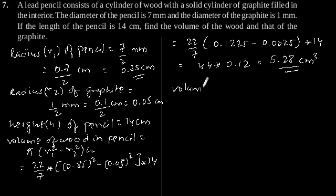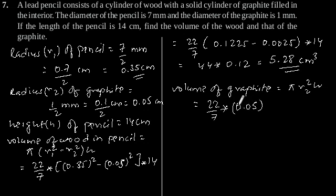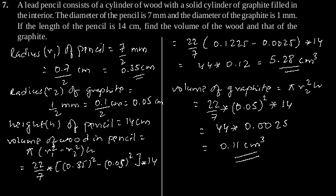Now, let's find out volume of graphite. Using formula pi R2 square h, putting the value of R2 and h we will get 22 by 7, R2 is 0.05 to the power 2 into h is 14. This will give 44 into 0.0025 which is equal to 0.11 cm³. The volume of graphite is 0.11 cm³.